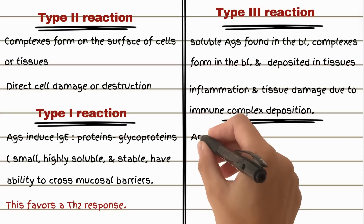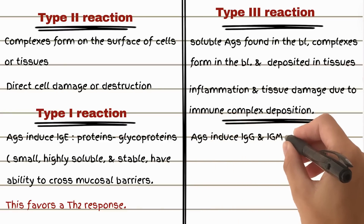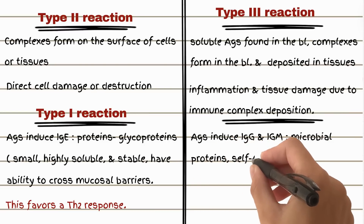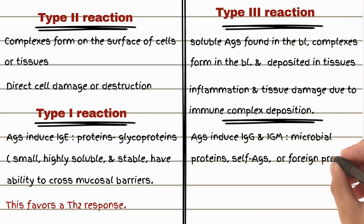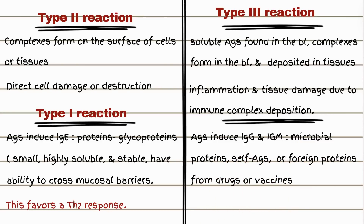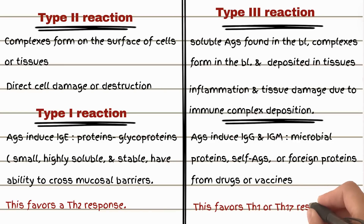Antigens that induce immunoglobulin G or immunoglobulin M production can be microbial proteins, self-antigens in autoimmune diseases, or foreign proteins from drugs or vaccines. These antigens are often encountered in the context of infections or chronic inflammation. They may enter the bloodstream through infections, vaccinations, or chronic diseases, favoring a T-helper 1 and T-helper 17 response.